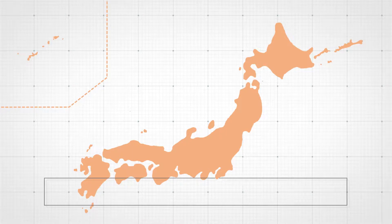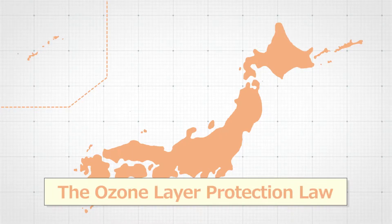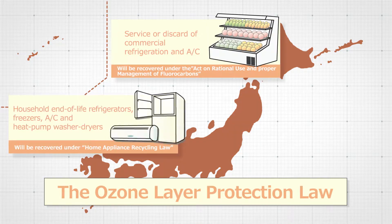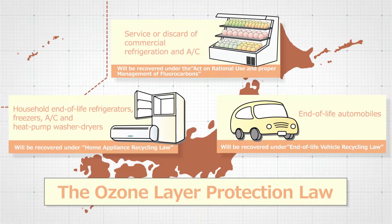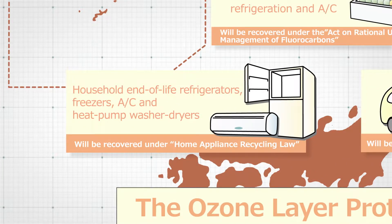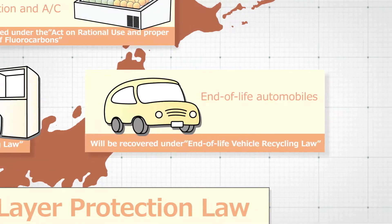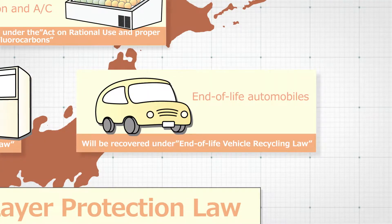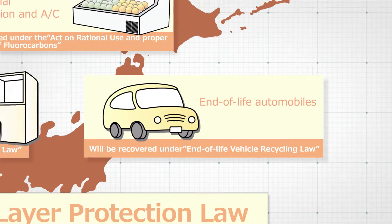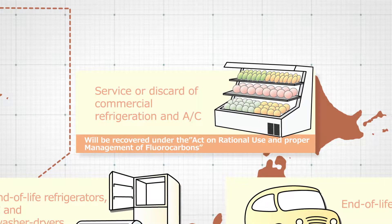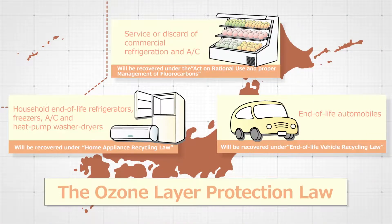As for Japan's fluorocarbon management, the production of ozone-depleting substances is regulated based on the ozone layer protection law. For household air conditioners, refrigerators, freezers, and washing and drying machines, there is a home appliance recycling law. Disposal of automobile air conditioners is regulated under the end-of-life vehicles recycling law. For commercial refrigerators, freezers, and air conditioning equipment, there is a fluorocarbon emission control law. These regulations mandate appropriate recovery of fluorocarbon to prevent its release into the atmosphere.